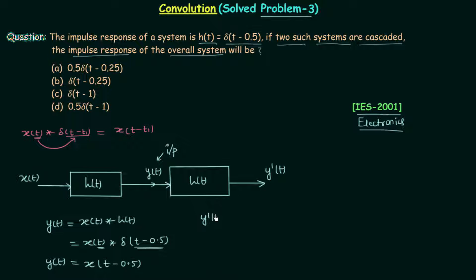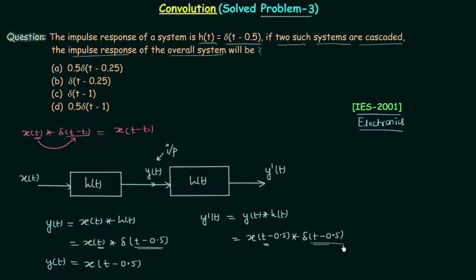We calculate ỹ(t) by convolving y(t) with h(t), since y(t) = x(t - 0.5) is our input for the second system. So we have x(t - 0.5) convolved with δ(t - 0.5). Using the convolution property — in place of t we put t minus 0.5 — this gives us x(t - 0.5 - 0.5), which simplifies to x(t - 1).